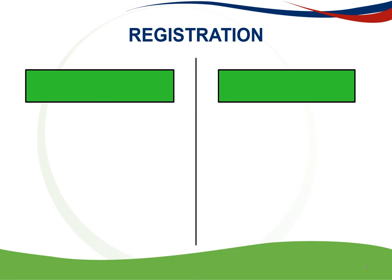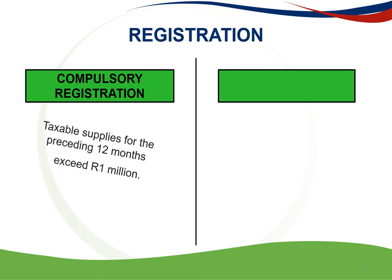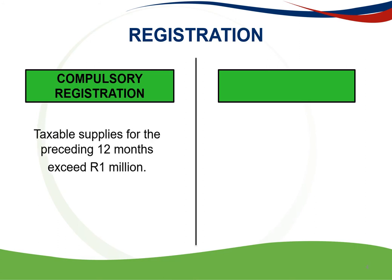There are two types of registrations for VAT in South Africa. The first is compulsory registration. A person is required to register at the end of the month during which the total value of taxable supplies for the preceding 12 months exceeded R1 million, or at the beginning of the month if it is anticipated that the total value of taxable supplies will exceed R1 million for the following 12 months.